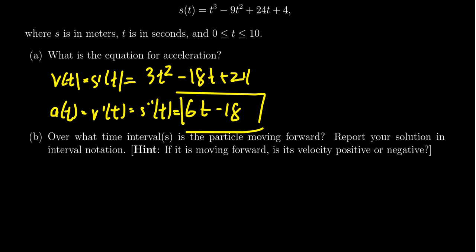we have to note over what time intervals is the particle moving forward. We have to write our answer in interval notation. We're given a hint here. If the particle is moving forward, what does that mean? If it's moving forward, is the velocity positive or negative? It'll be moving forward when the velocity is positive. If the velocity was negative, that means it's moving backward.